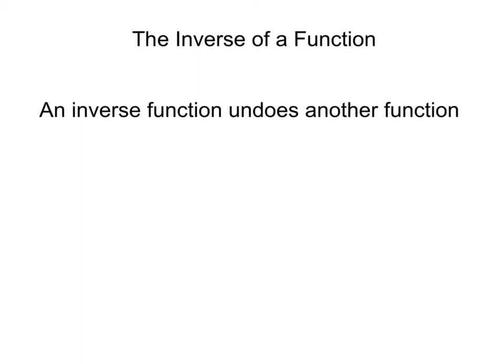Before I give you an example of that, let me show you a bit of the notation you need to be familiar with. So if we have a function f, the inverse of f is written like this. We don't say 'f to the negative first power' — we call this 'f inverse.' Similarly, if I had g as a function, the inverse of g we would write like this — g inverse.